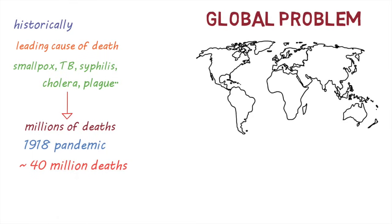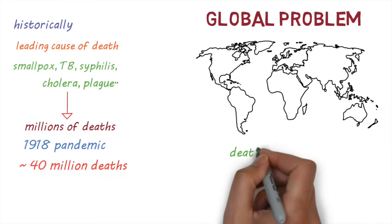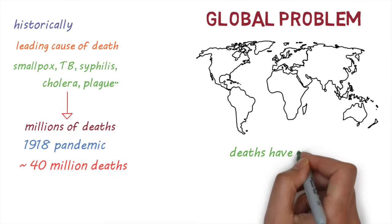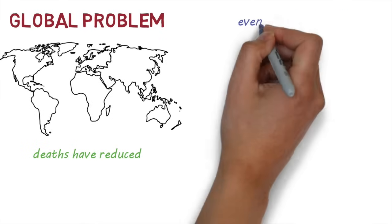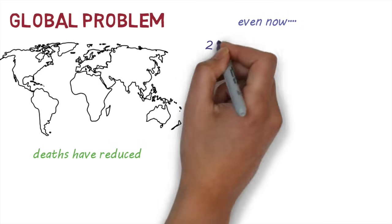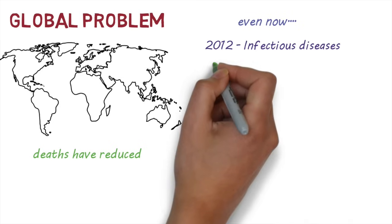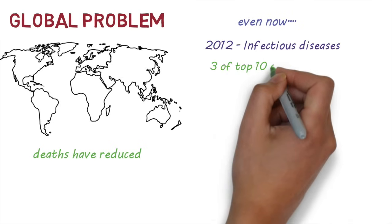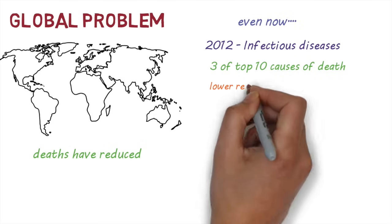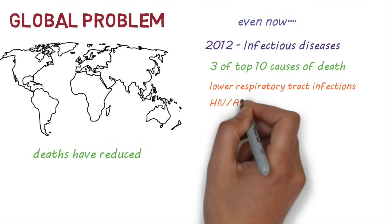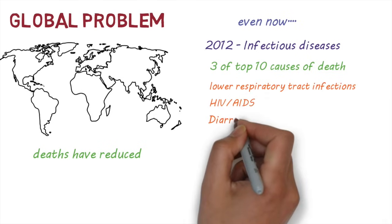Thankfully, advances in nutrition, antibiotics, immunization, food safety, housing, and sanitation have led to a massive reduction in infectious diseases. However, even now they're a problem. In 2012, infectious diseases were responsible for three of the top 10 causes of death in the world. These three were lower respiratory tract infections, HIV-AIDS, and diarrheal diseases.